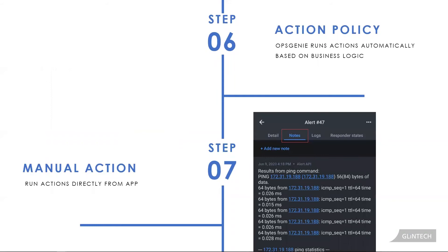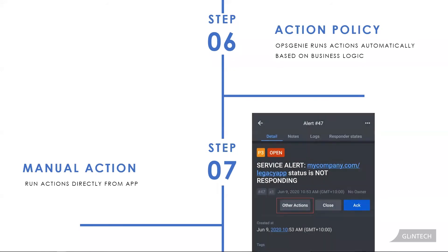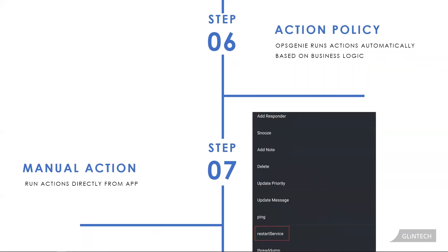In this particular case, you know this server has a known memory leak issue due to the legacy application on it, so you want to restart the service. From your phone, you run the restart service action — a previously scripted Groovy script that restarts the application server. The response is then added to the notes section of the alert, and then to Jira, and then to Slack.